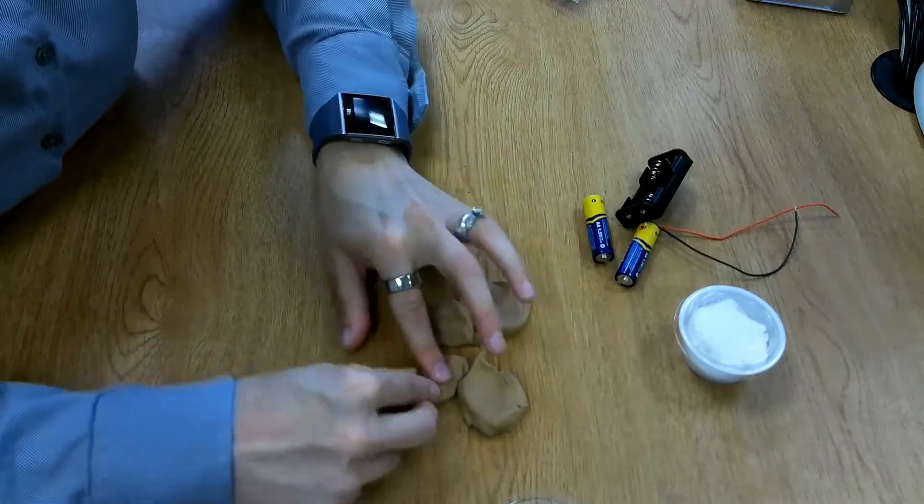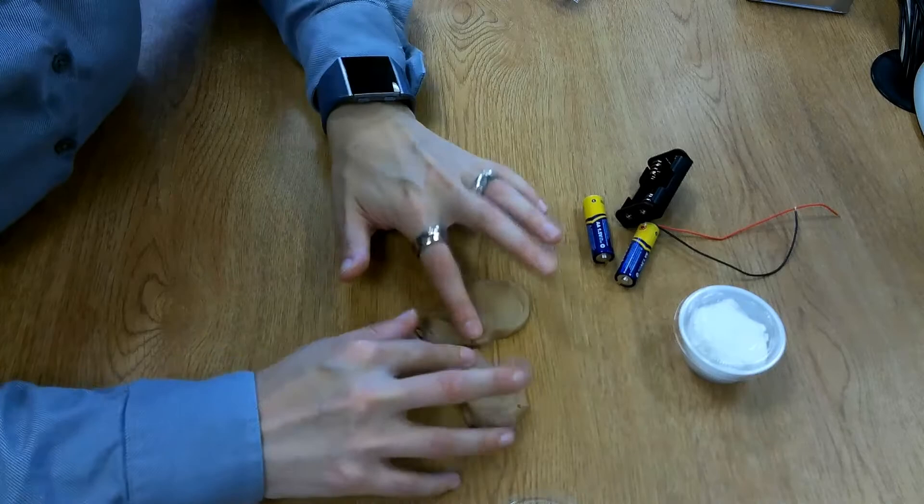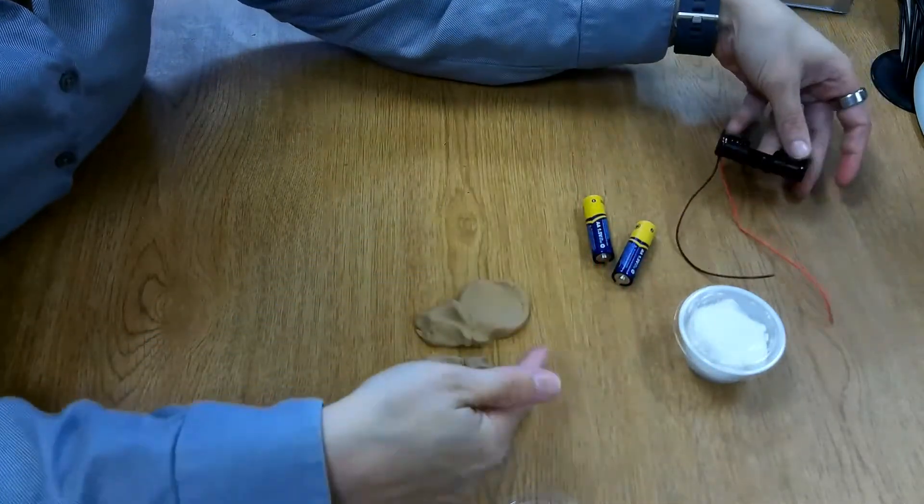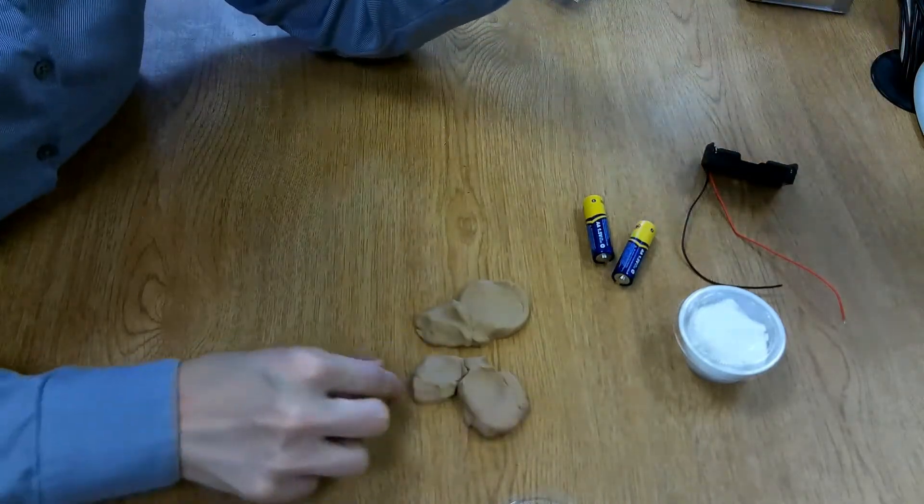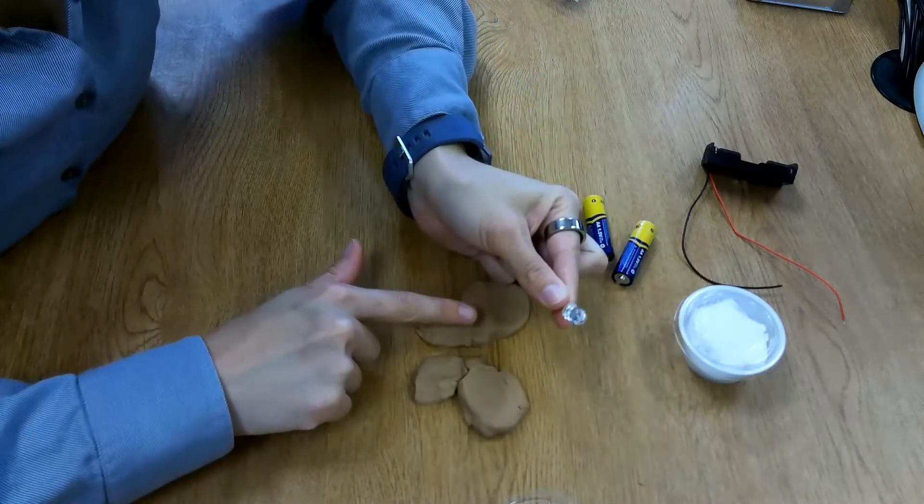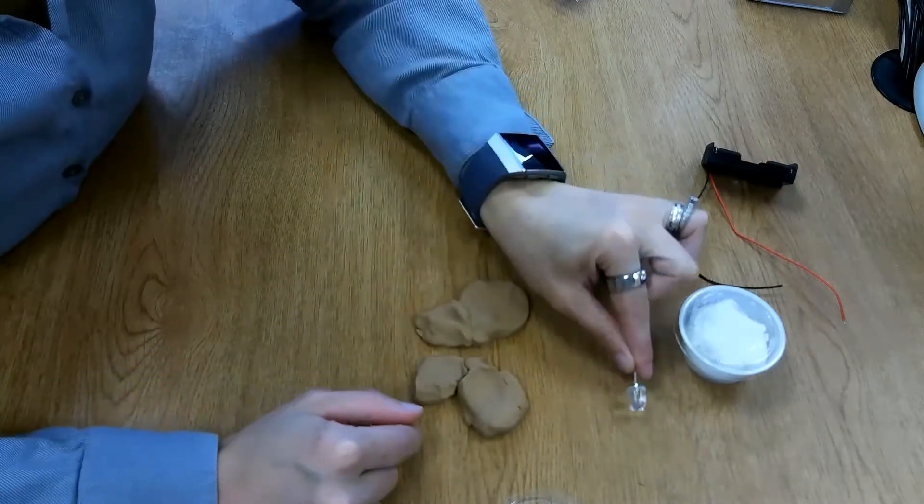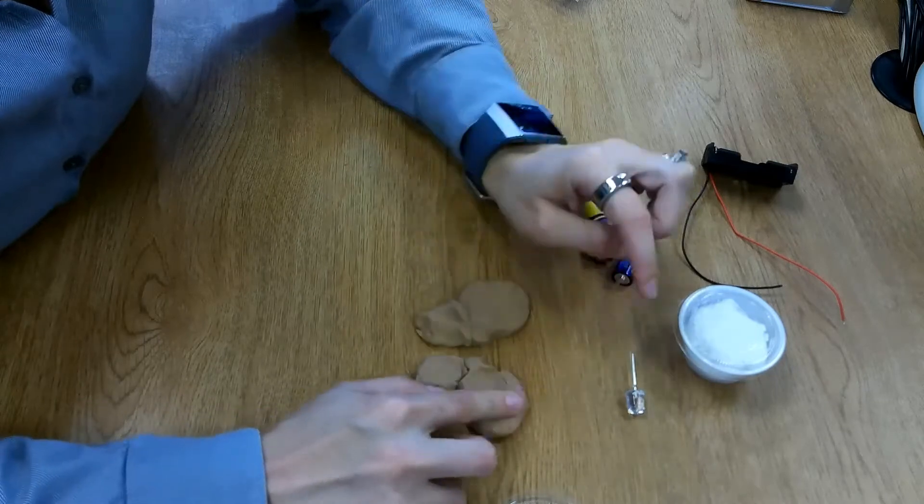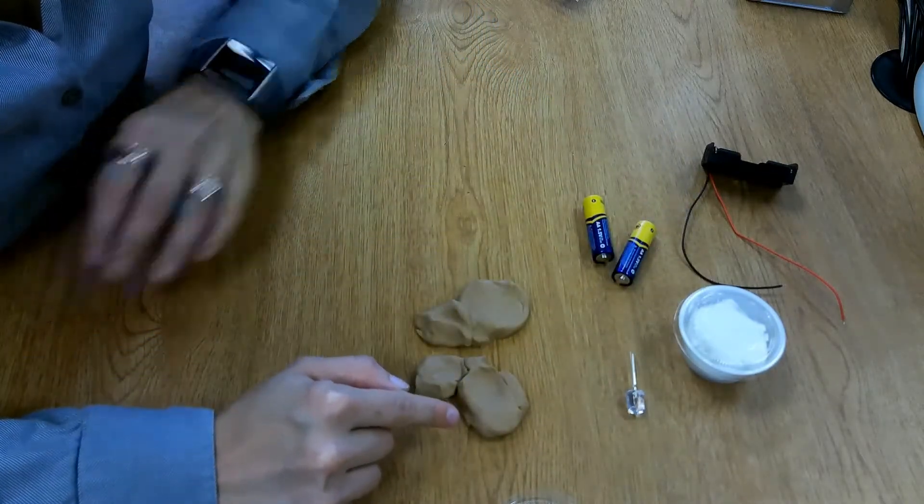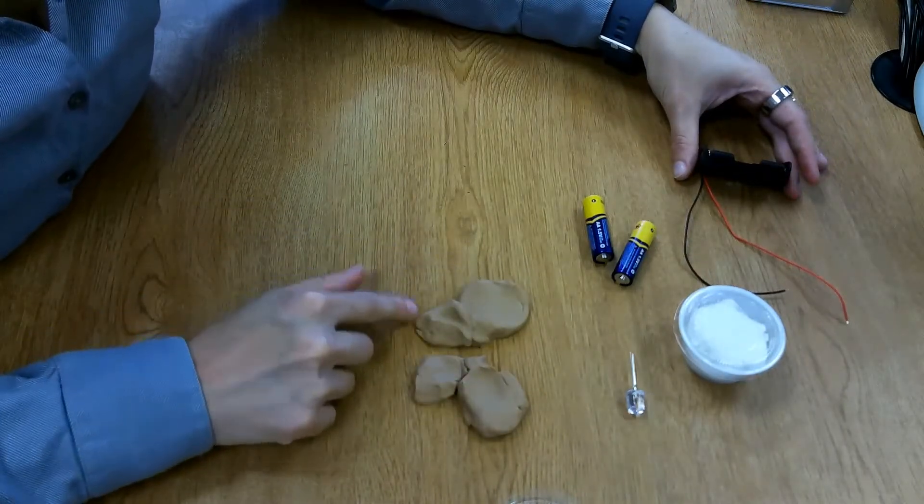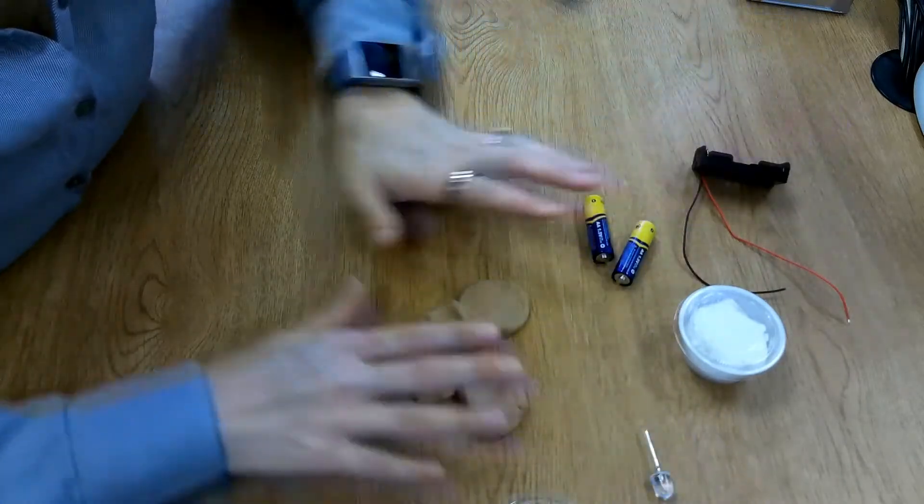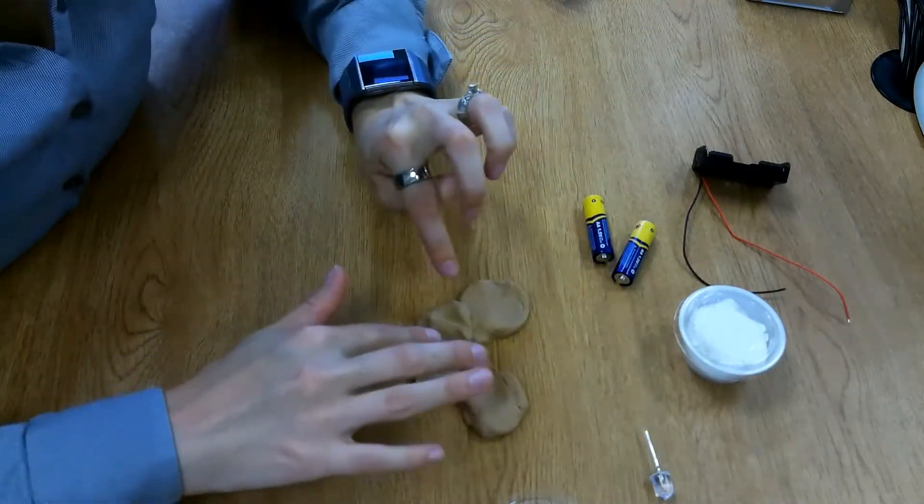If the Play-Doh is touching itself on both sides once you've got the battery pack connected, the electricity will be able to flow through the Play-Doh directly without jumping through the LED, and that creates a short circuit because the electricity takes the shorter path through the Play-Doh. That's why your LED will not light up once you have everything connected if your Play-Doh is all touching each other.